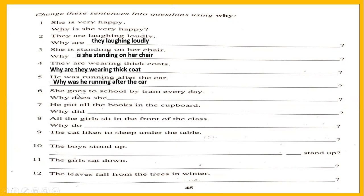She goes to school by tram every day. Here there is no '-ing,' so it is simple present. When it's with the S — 'goes' — then you write 'does.' For making a question: why does she go to school? When you use 'does,' the verb becomes the base form — 'go,' not 'goes.' Why does she goes is wrong. Why does she go to school — that is correct.